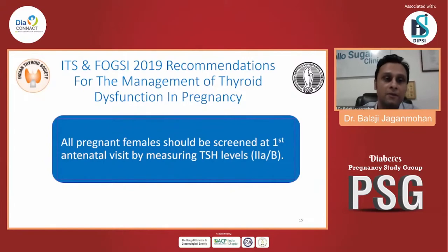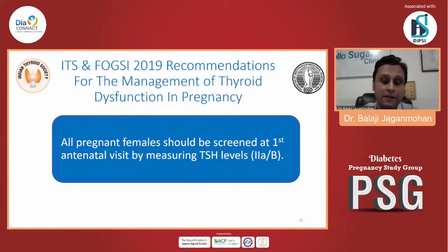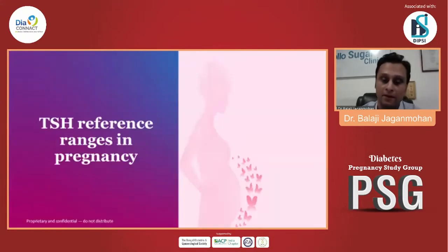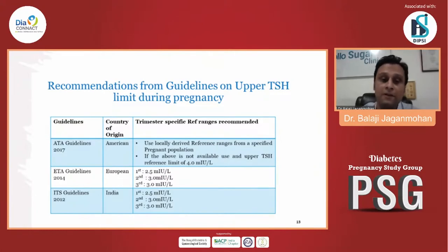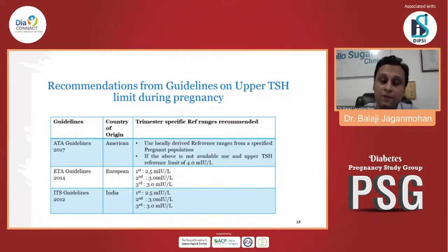The Indian Thyroid Society as well as the Federation of Obstetrics and Gynecology Society of India have clearly mentioned that all pregnant women should be screened at the first antenatal visit for TSH levels — this carries a grade 2A and class B recommendation. Looking at international guidelines — ATA 2017, ETA 2014, and ITS 2012 — all have clearly said that during the first trimester, TSH should be kept less than 2.5, although ATA says you can keep it less than 4. During the second and third trimester, it should be kept less than 3.